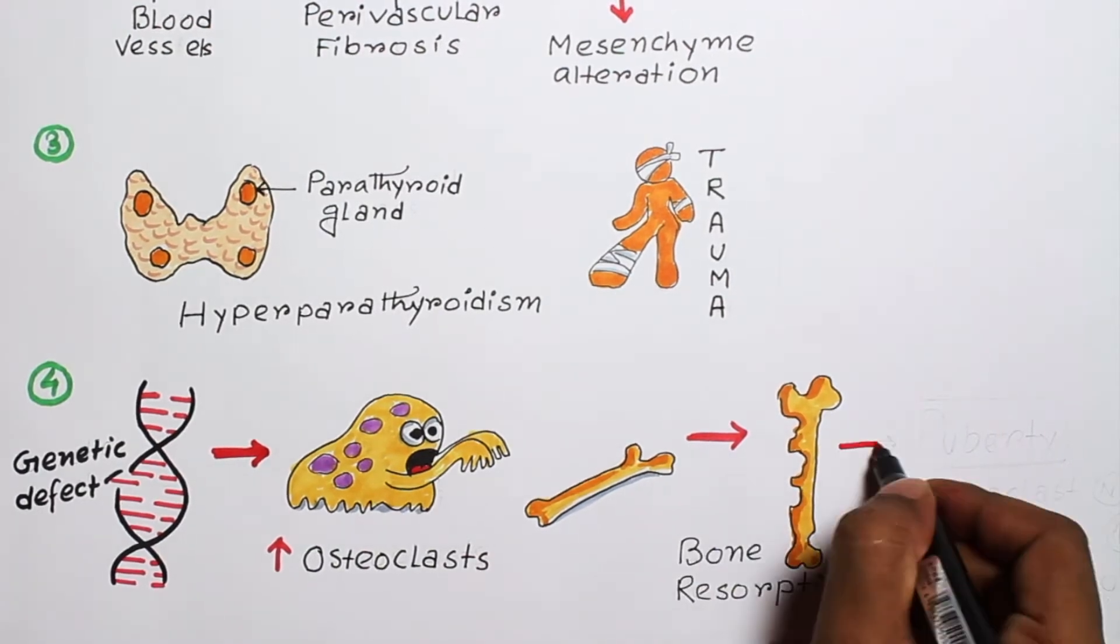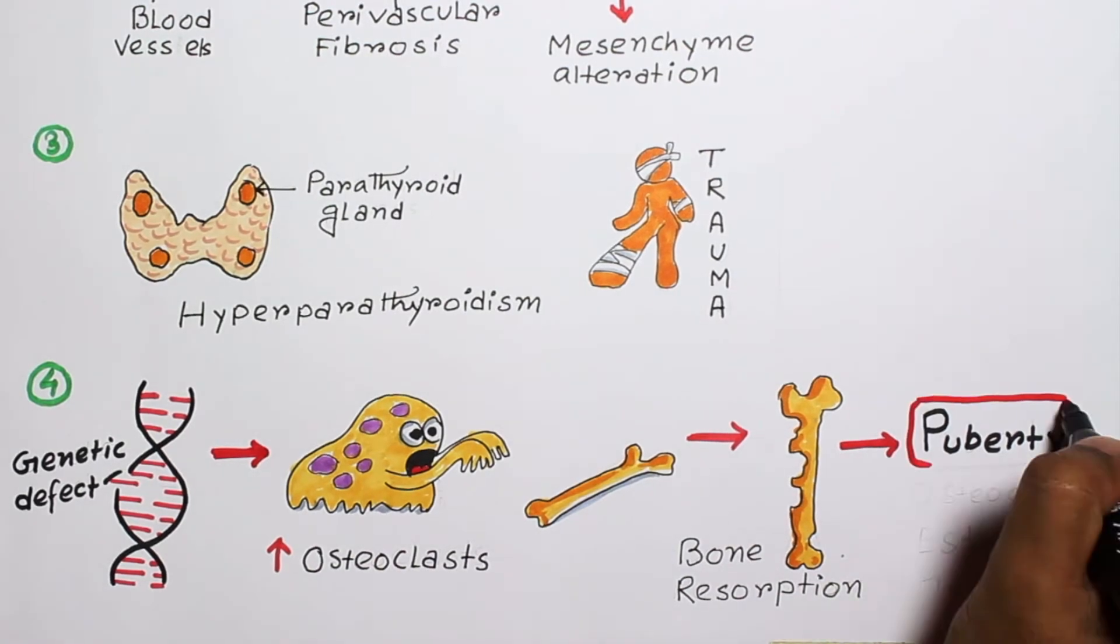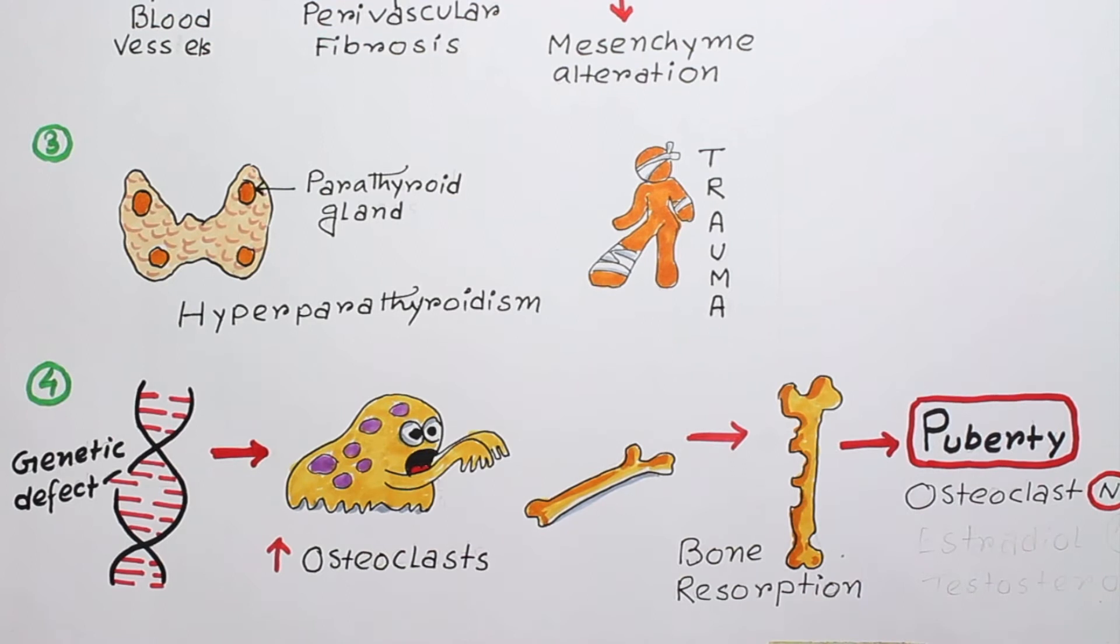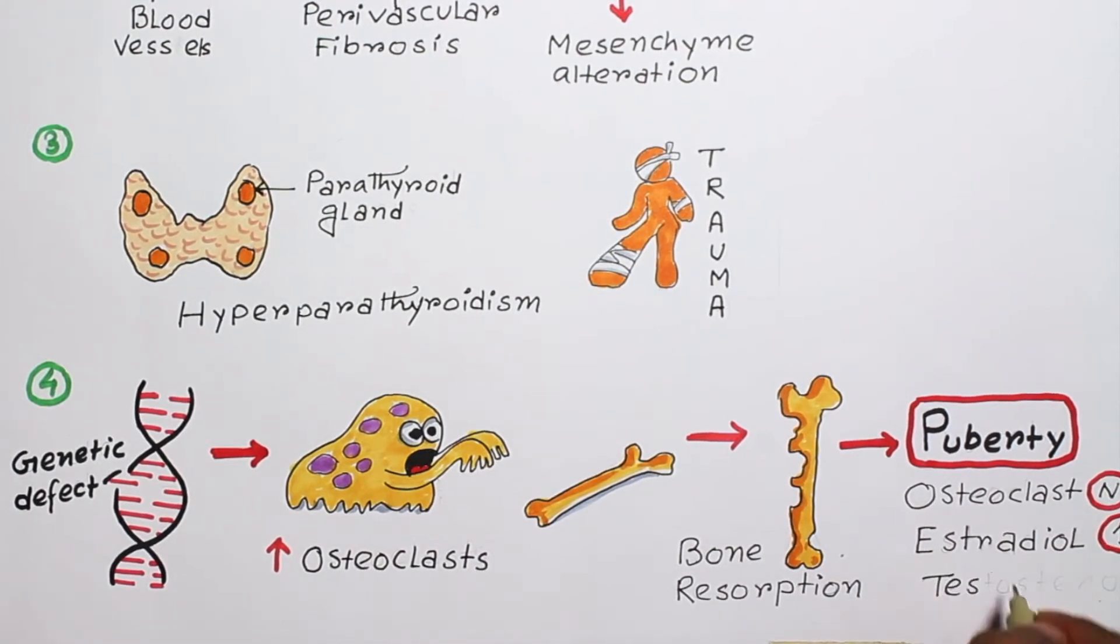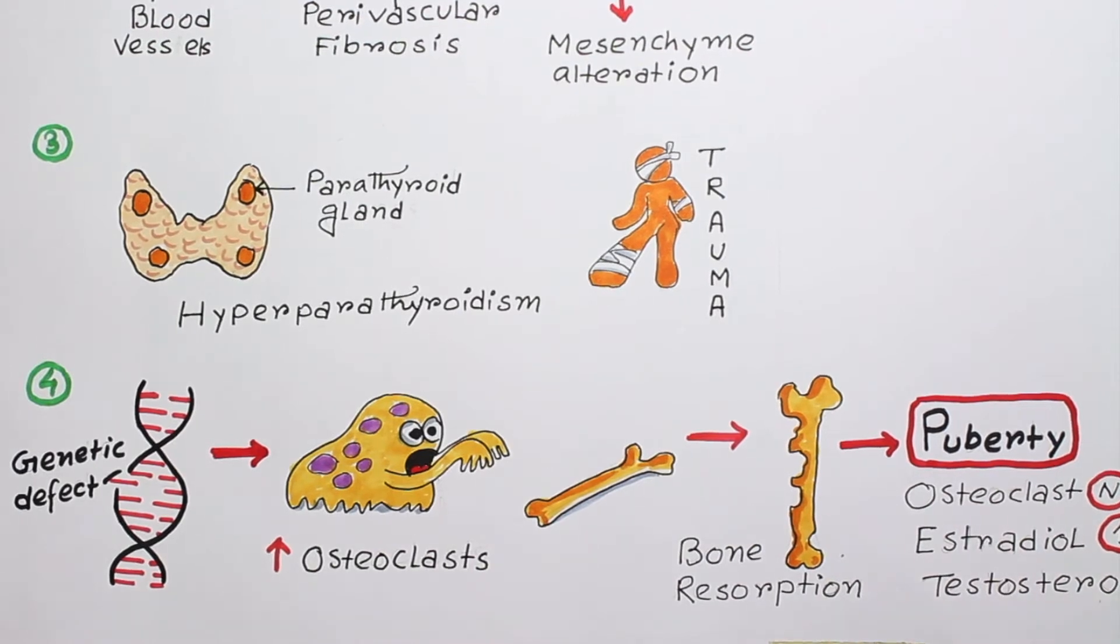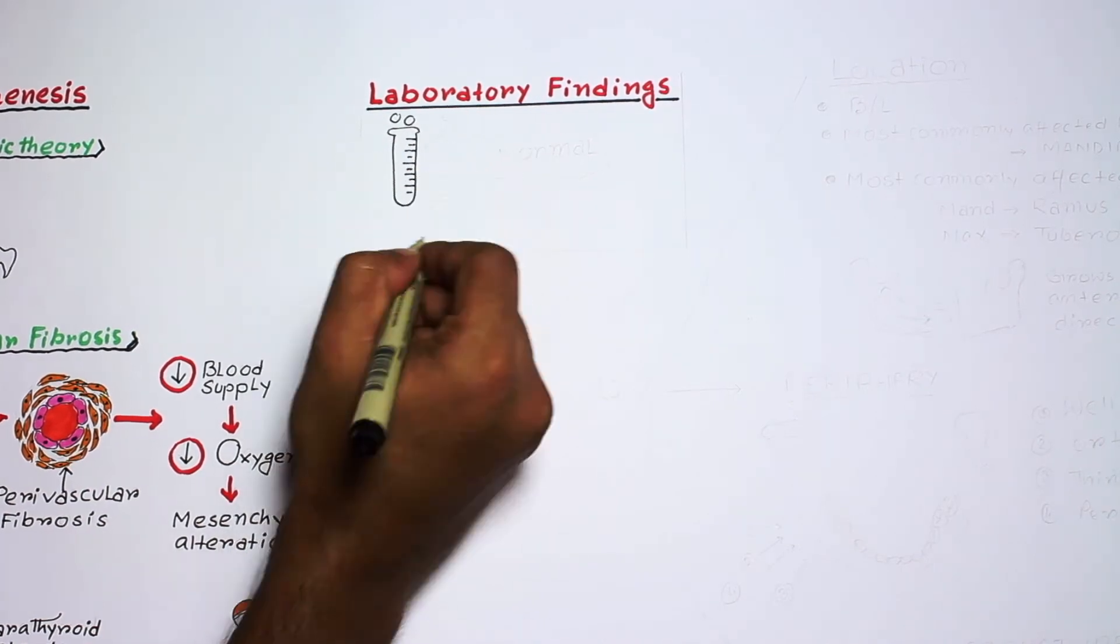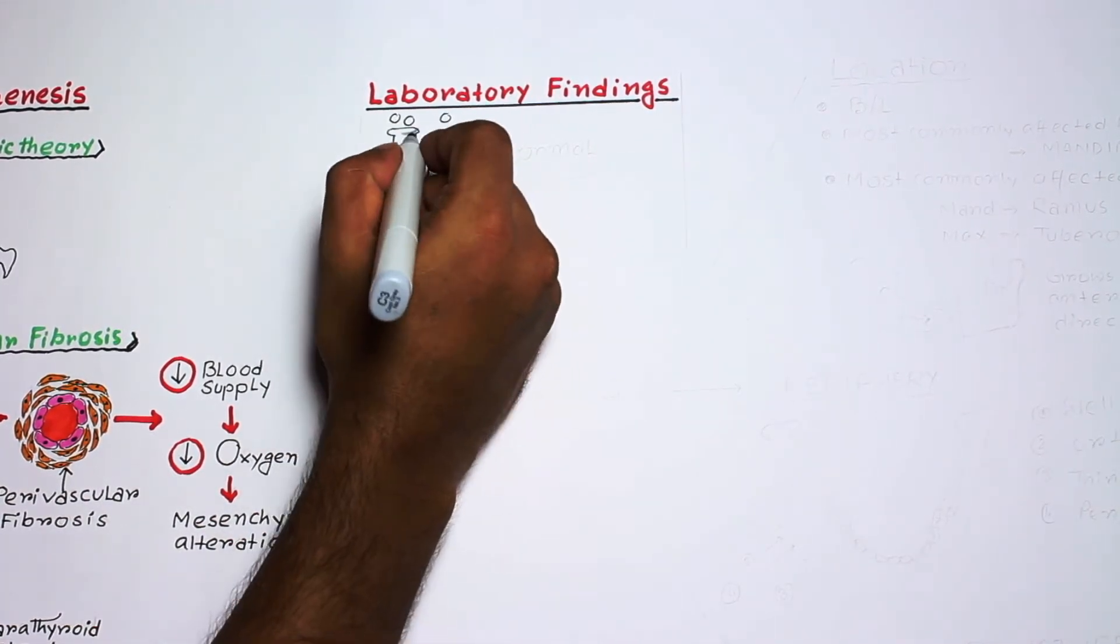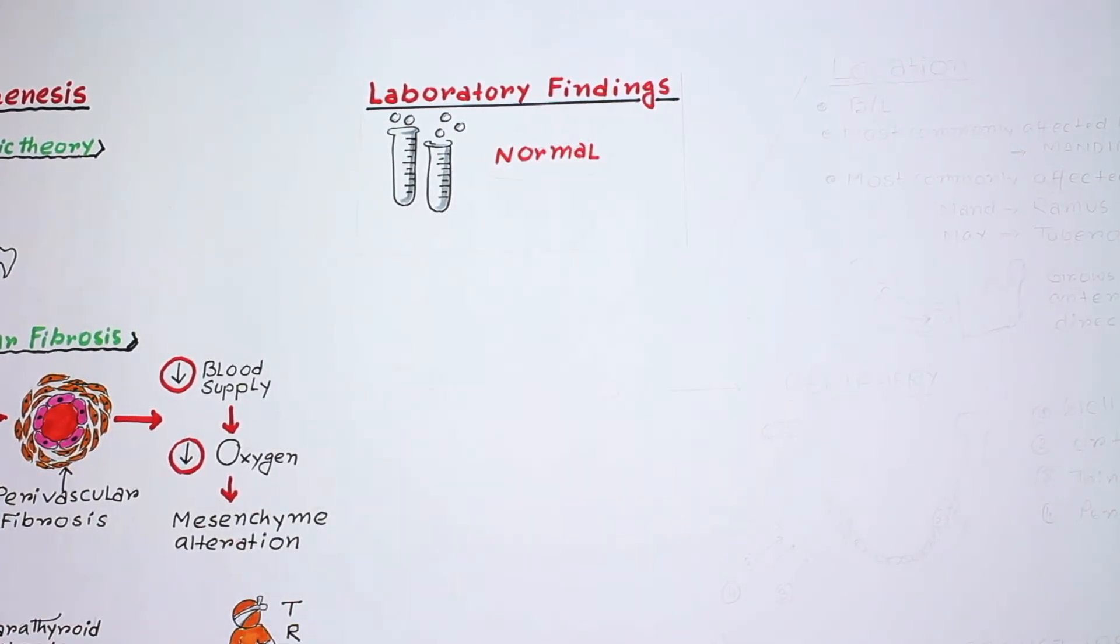The number of osteoclasts are normalized during puberty with physiological increased synthesis of sexual hormones like estradiol and testosterone. That's why at puberty the lesion begins to regress. The biochemical findings are typically normal in patients with Cherubism. This is an important point for competitive exams.